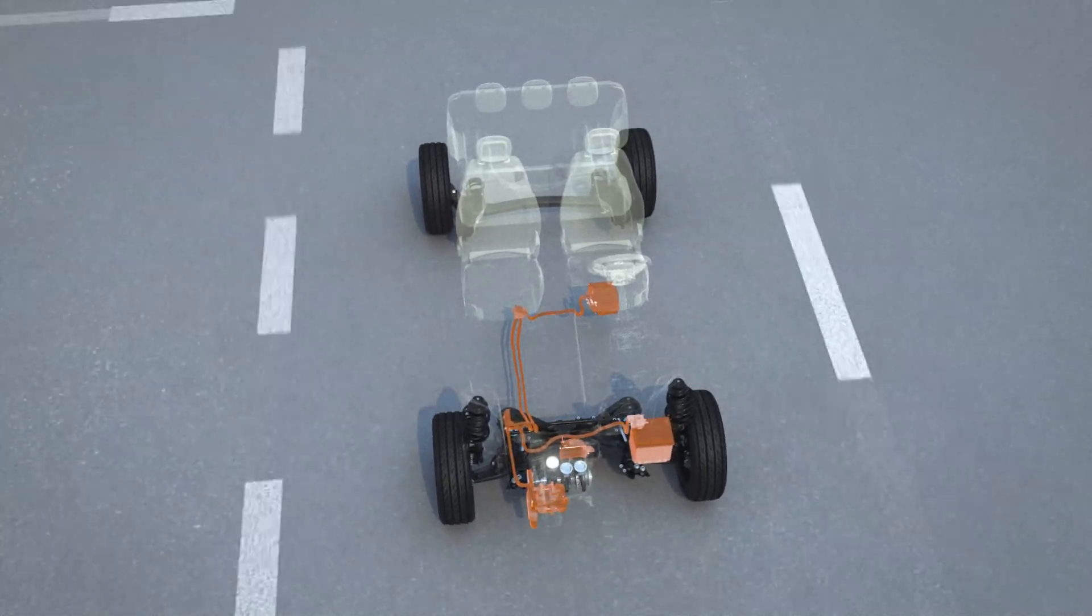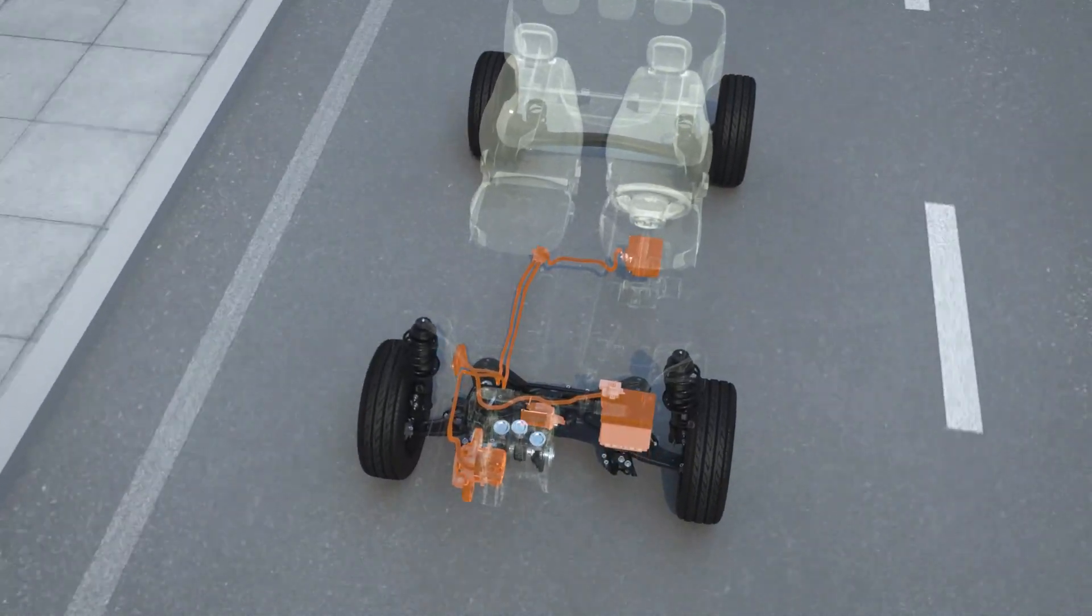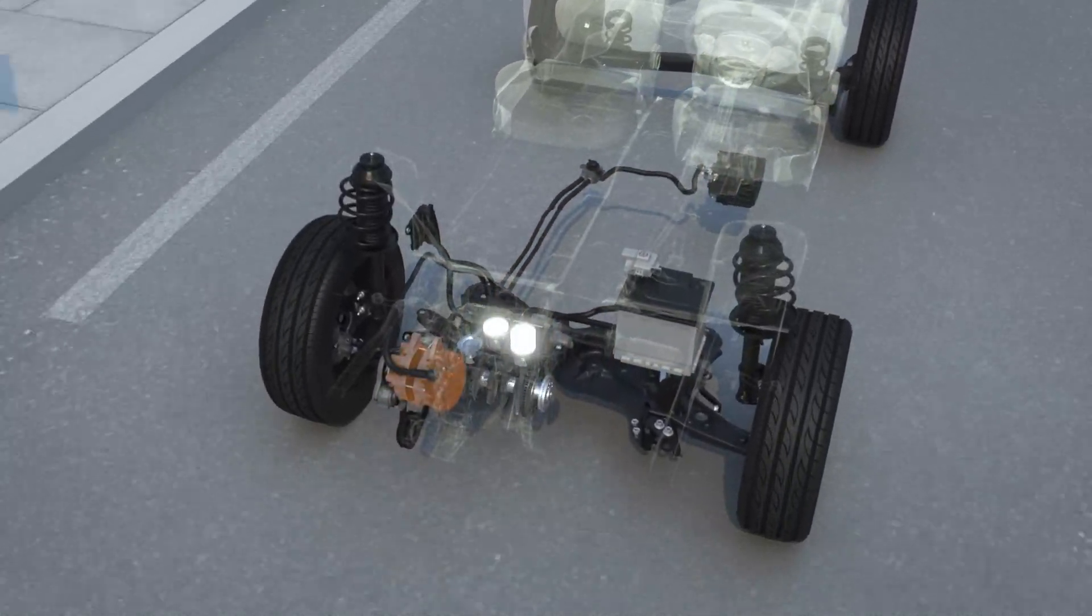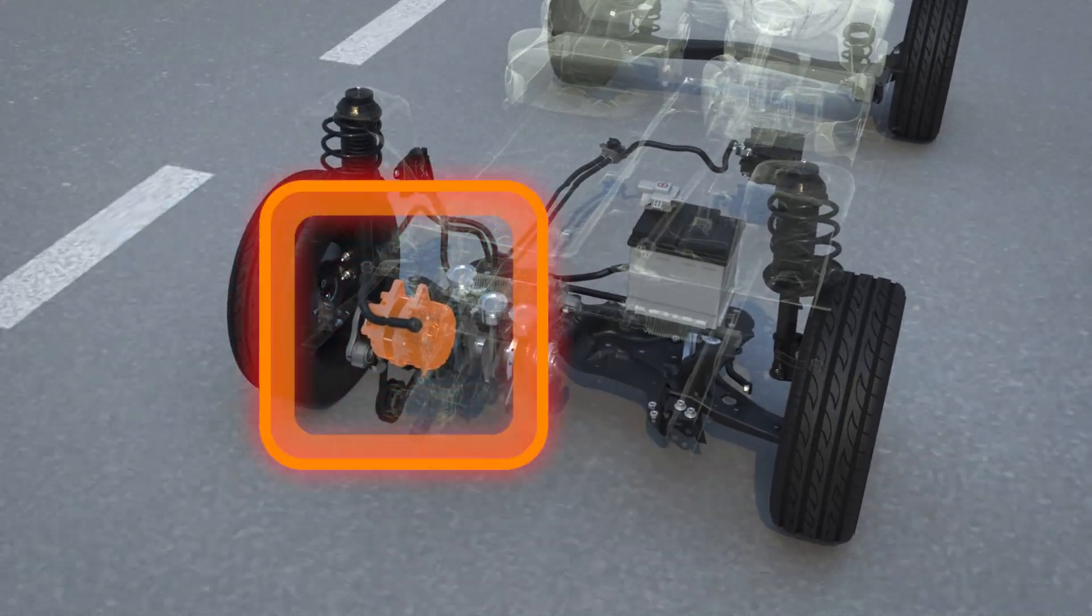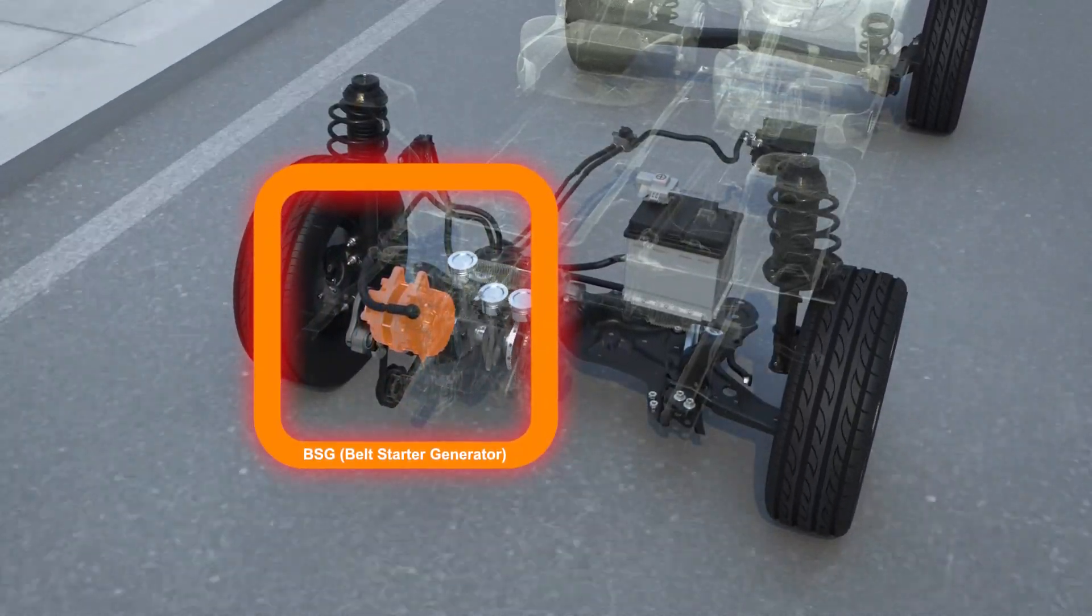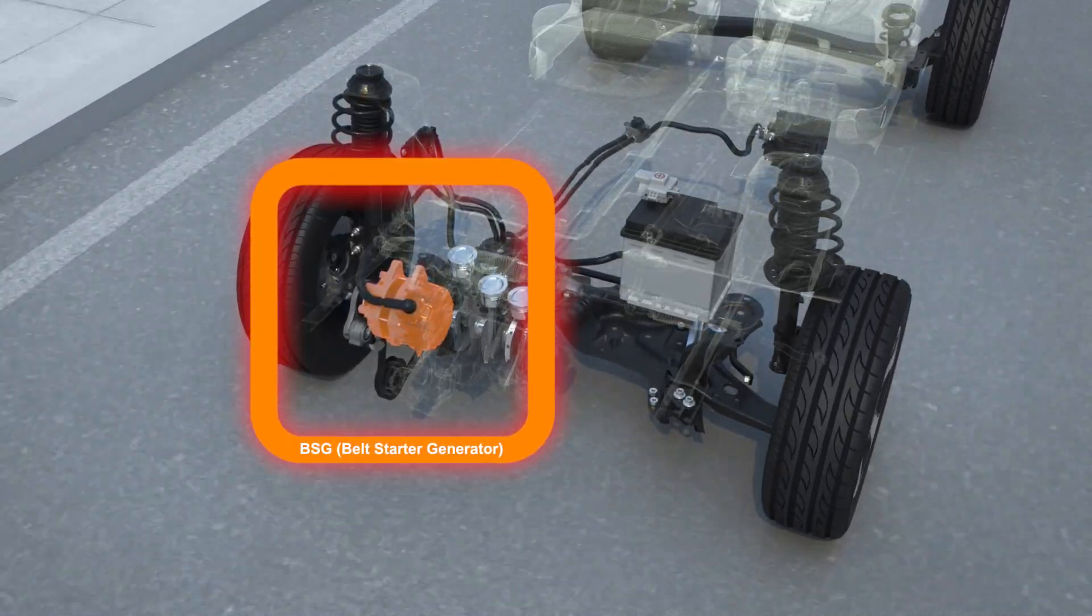As a hybrid, the new Fiat Panda is eligible for a range of benefits from local authorities. The BSG Belt Start Generator electric motor is at the heart of the hybrid technology, working as both an electric generator during energy recovery and as an electric motor when providing support to the main engine.